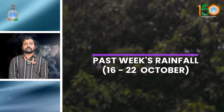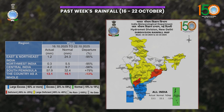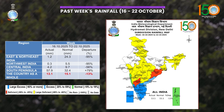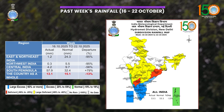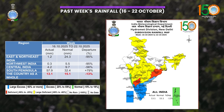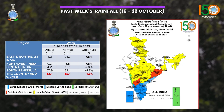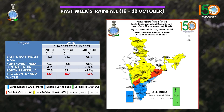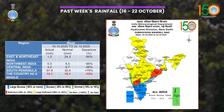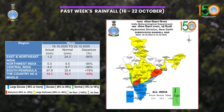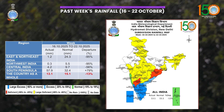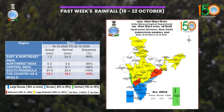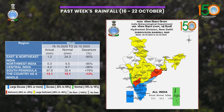Coming into the weekly rainfall scenario for last week, you can see from the map that major parts of South Peninsular India received large excess rainfall, whereas Central India and Northeast India recorded large deficit. Leaving aside South Peninsular India, all the subdivisions show departures in the range of minus 50 to minus 90 percent. With respect to the country as a whole, the country received rainfall with a minus 13% departure.